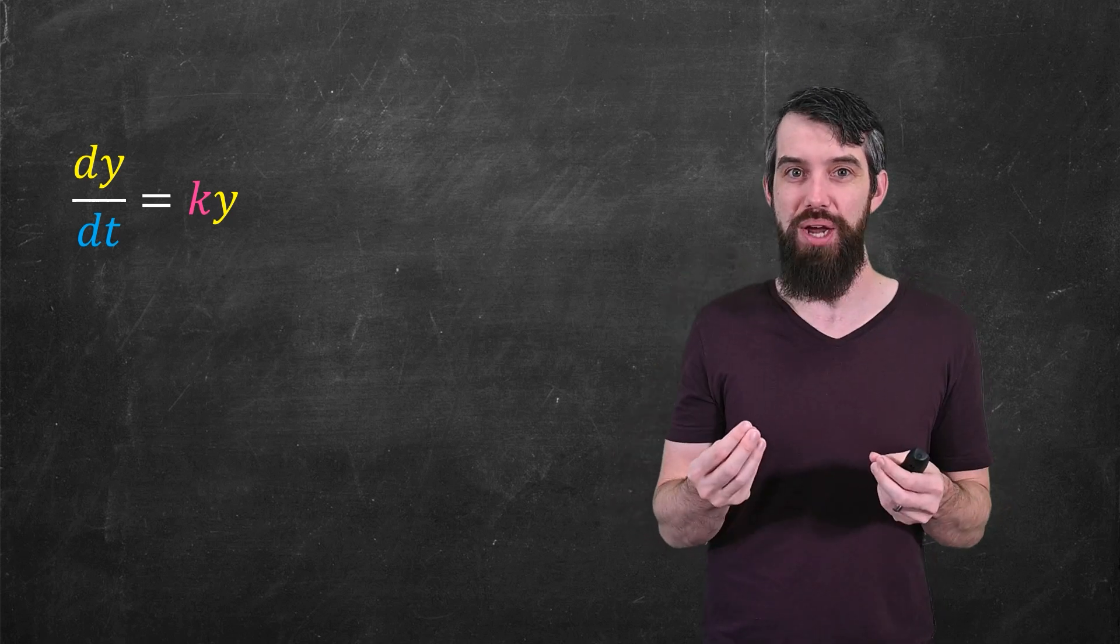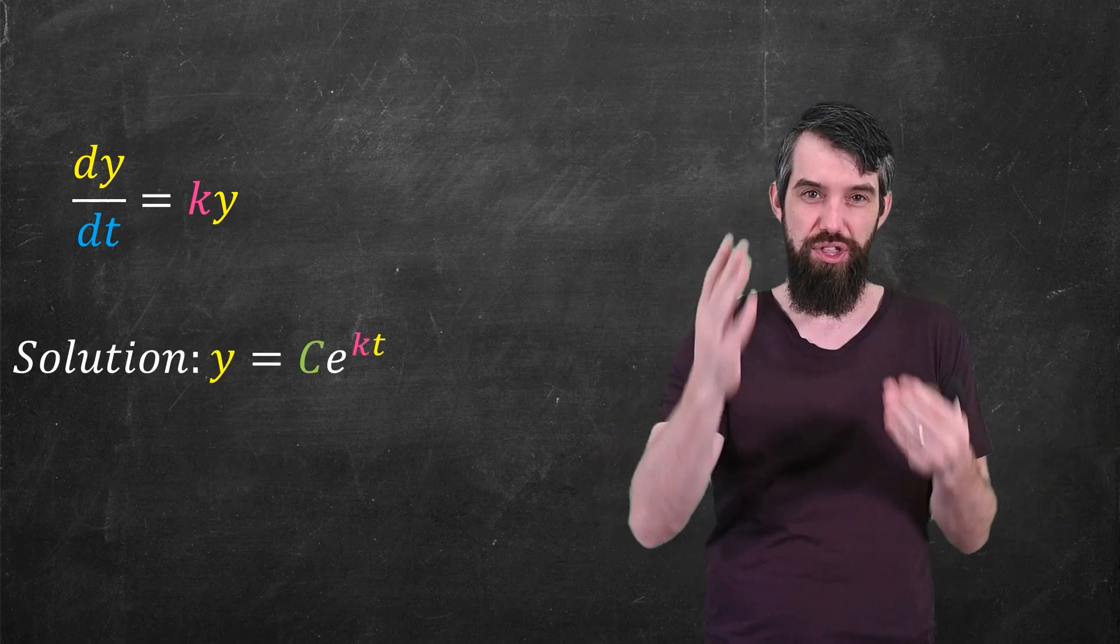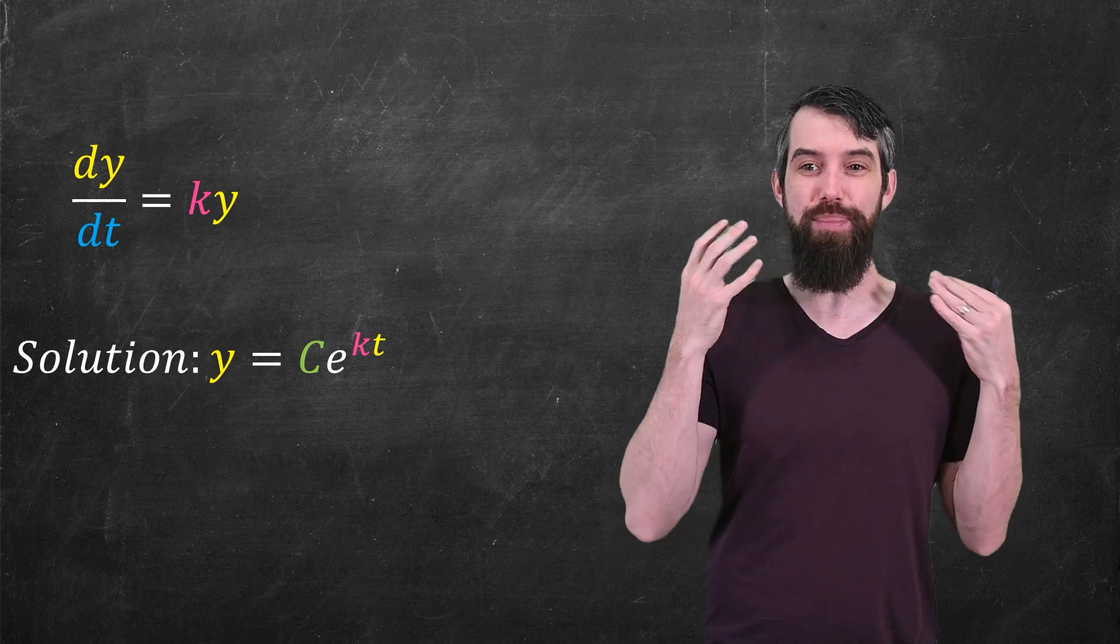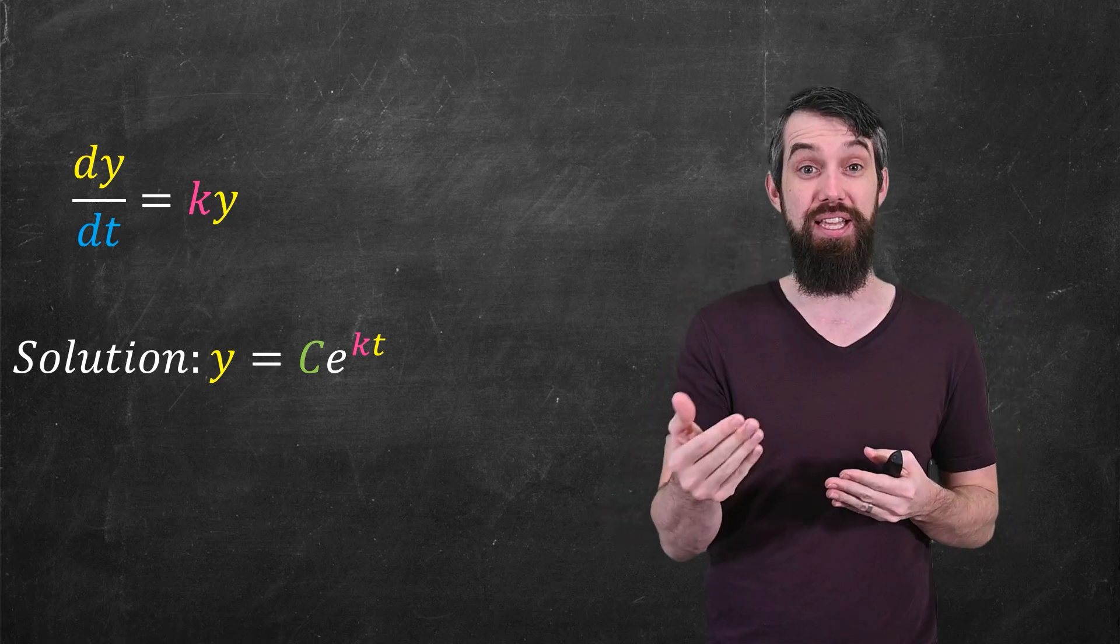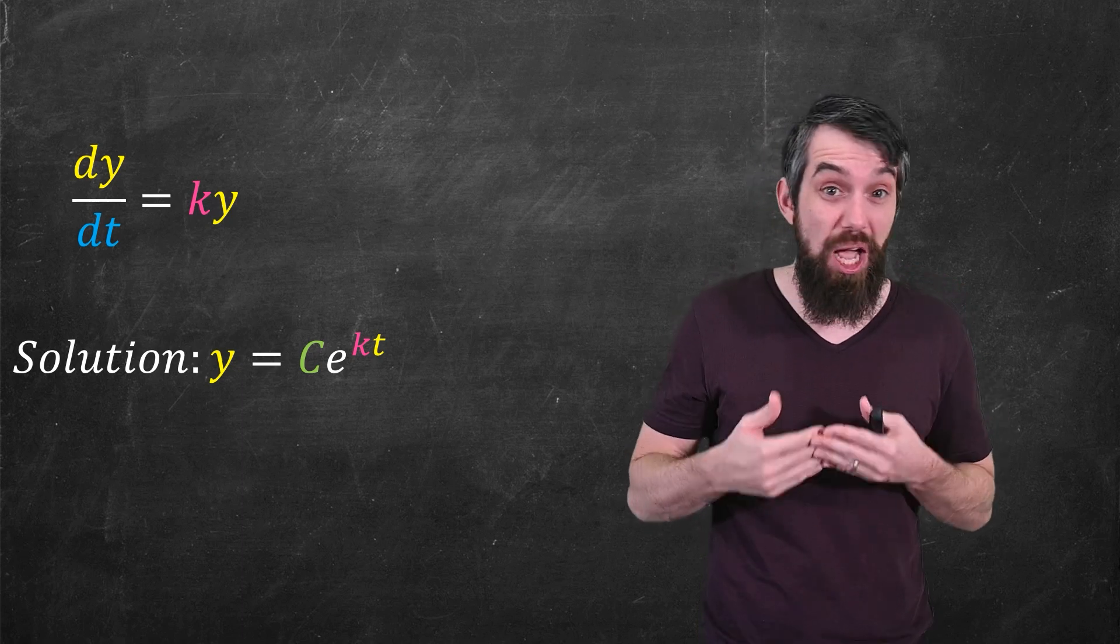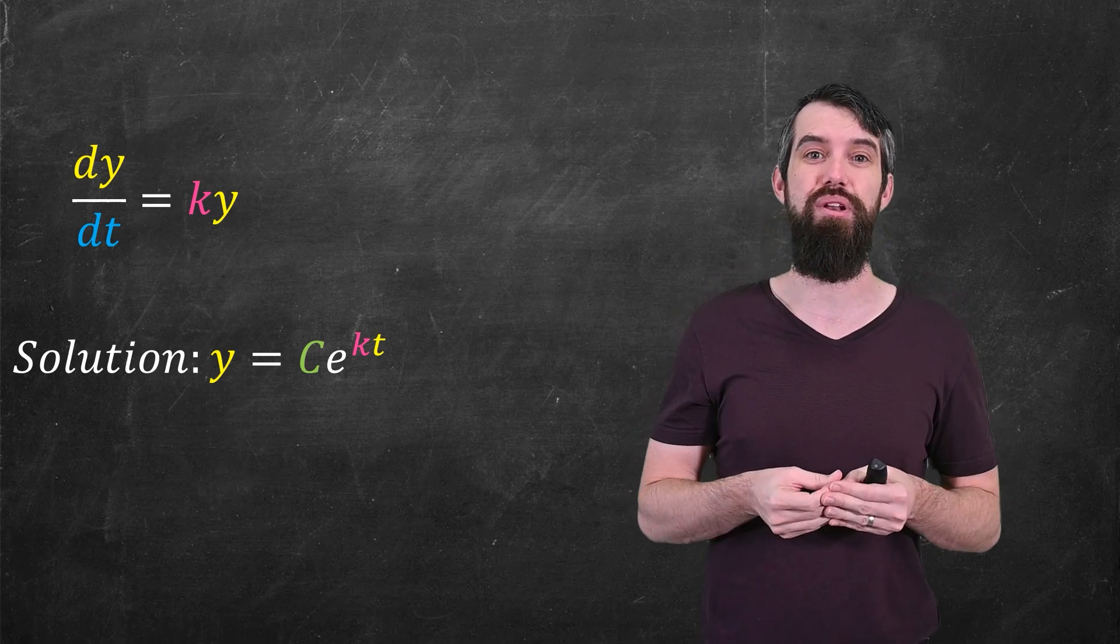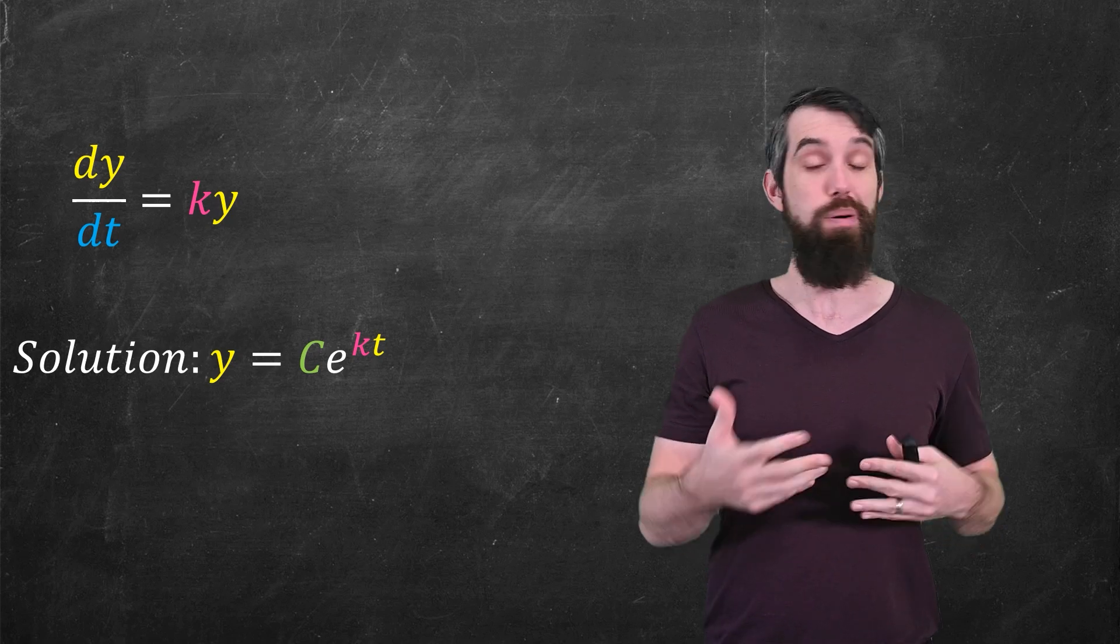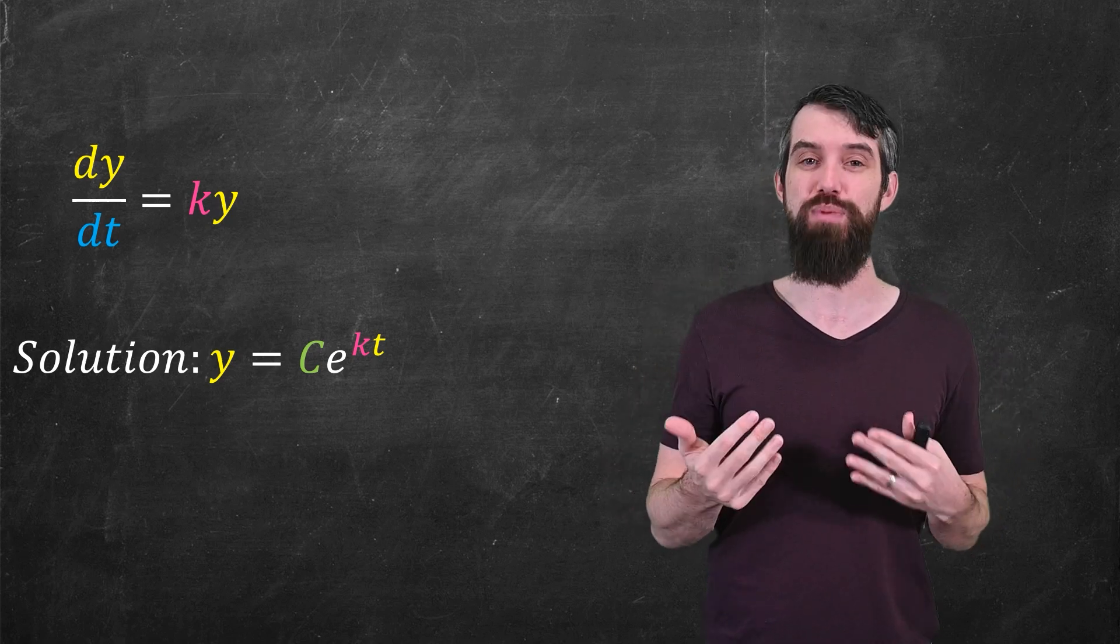But when we previously talked about it, I just gave you the solution. I said the solution is y equals some constant times e to the kt. And you could verify that yes, it was a solution by plugging it into the left-hand side, taking the derivative, setting that equal to the right-hand side. But where did this come from? That's what I'm going to answer in this video.